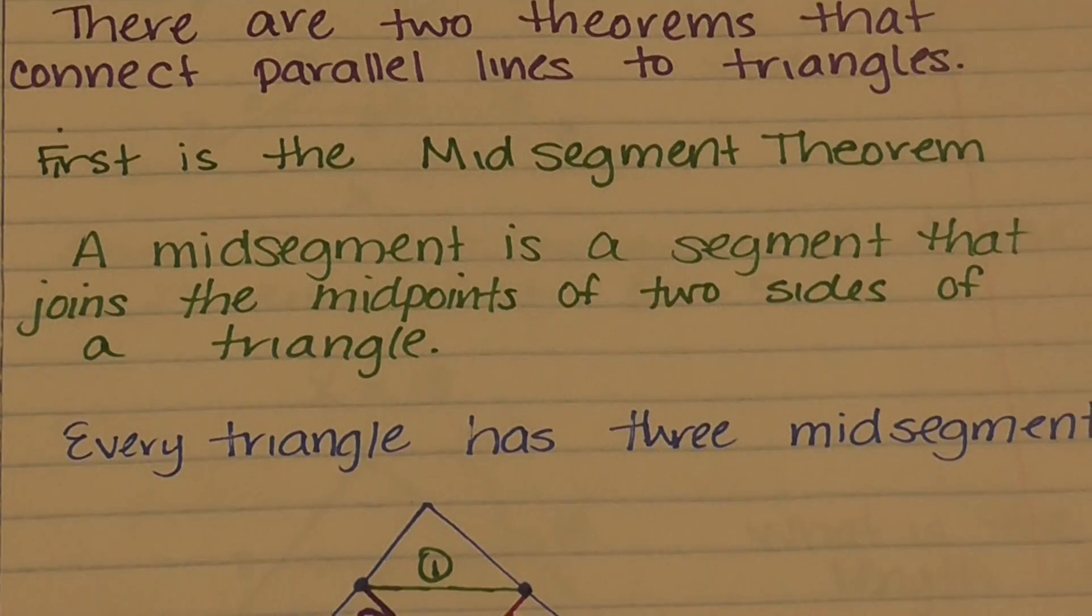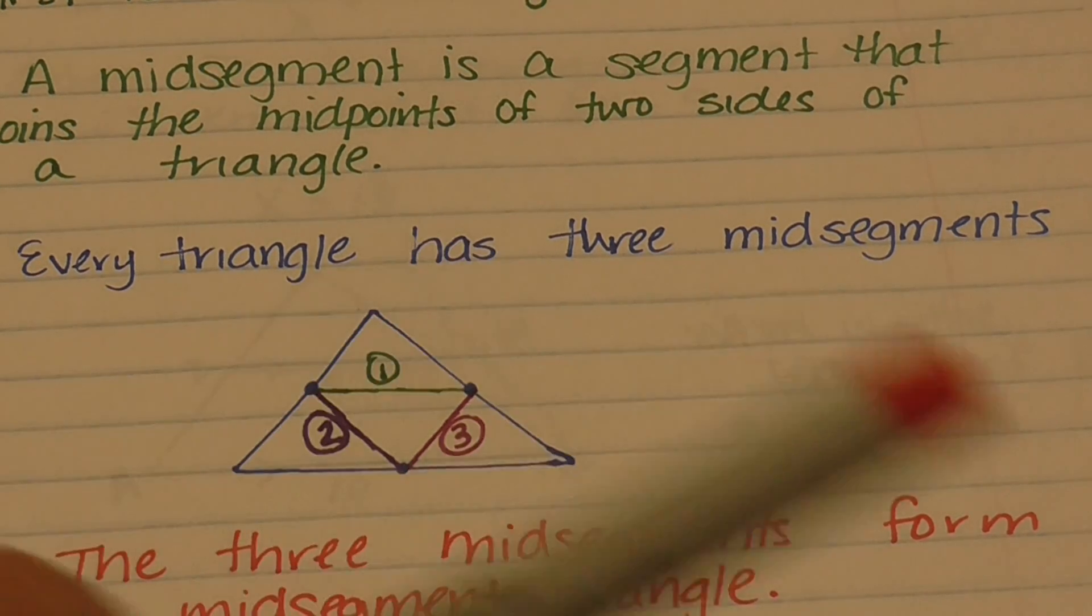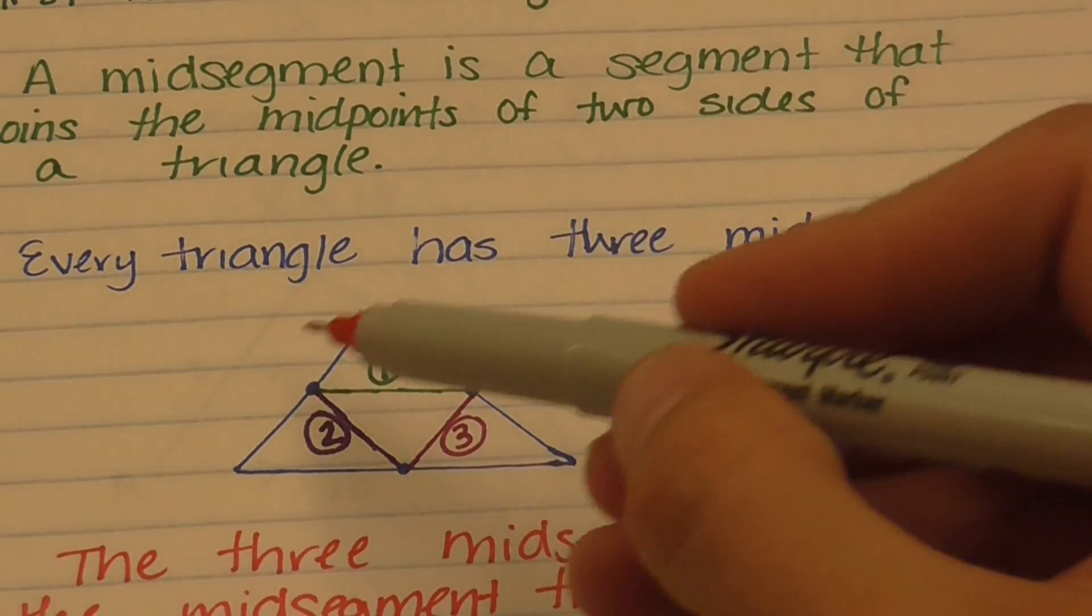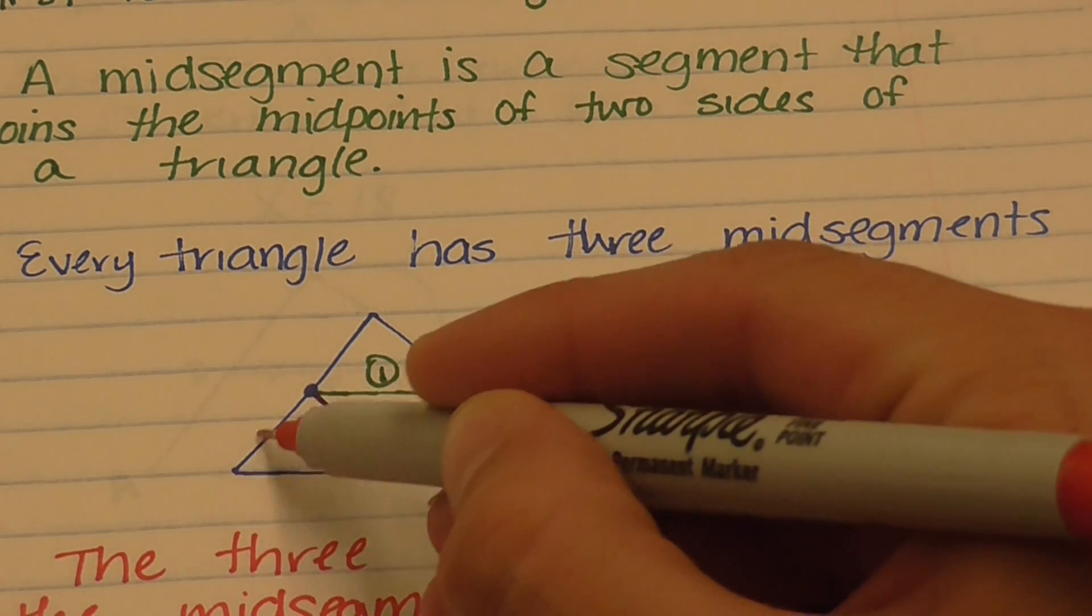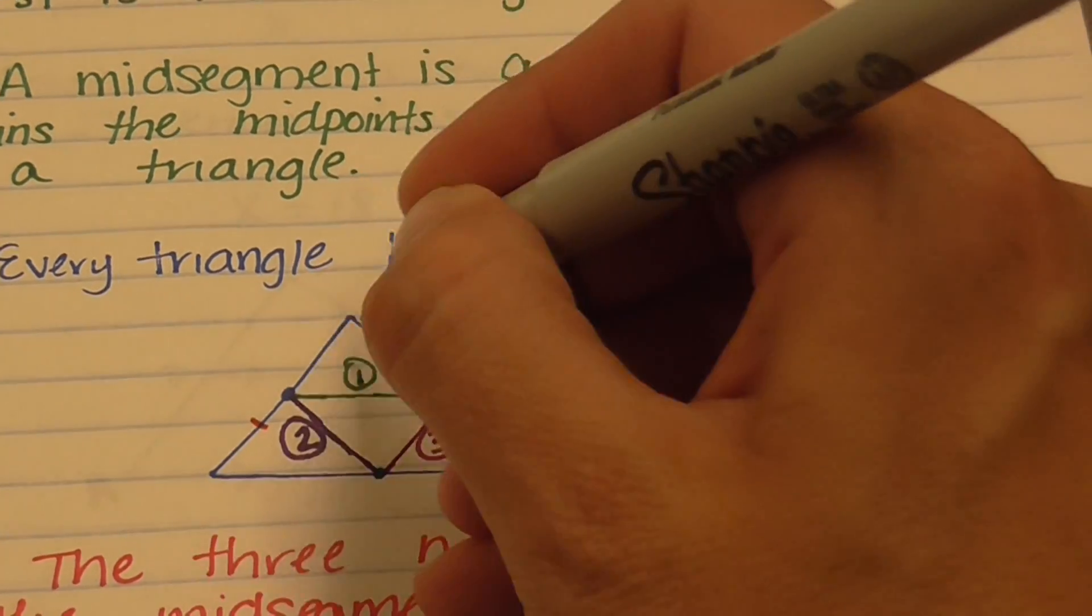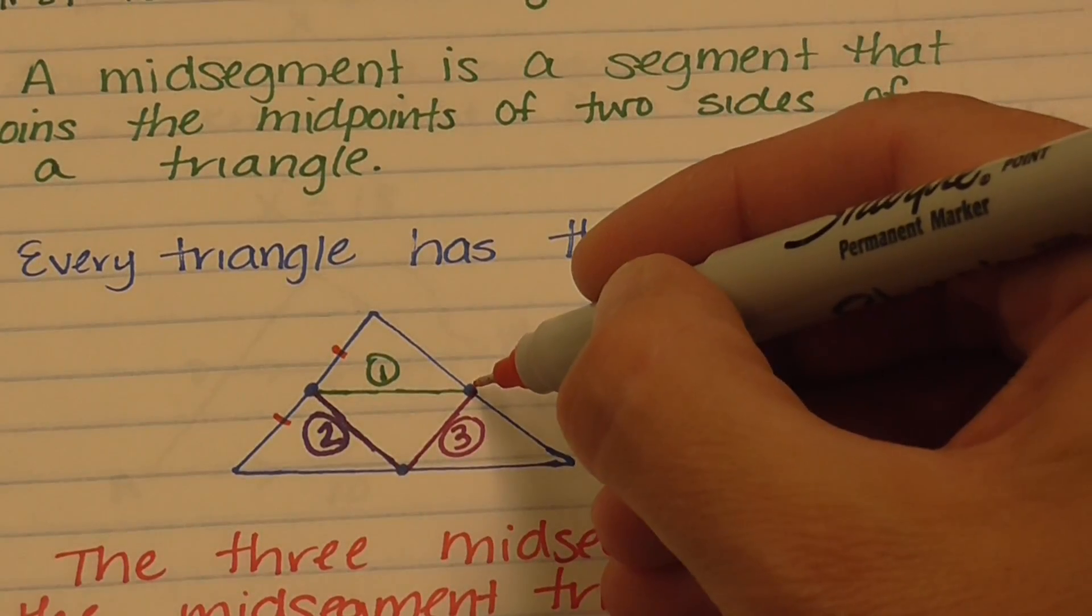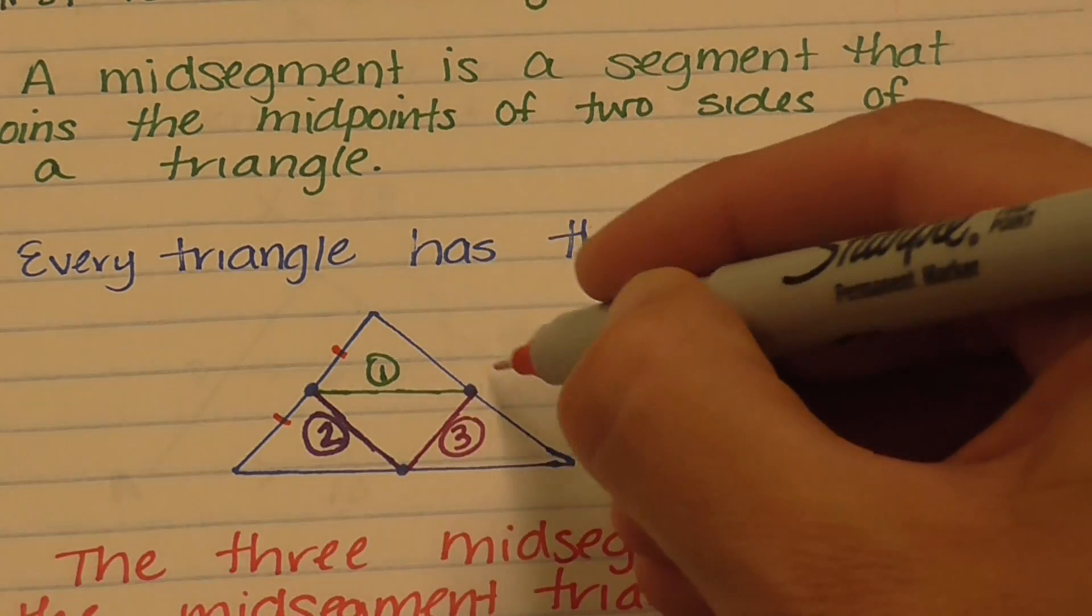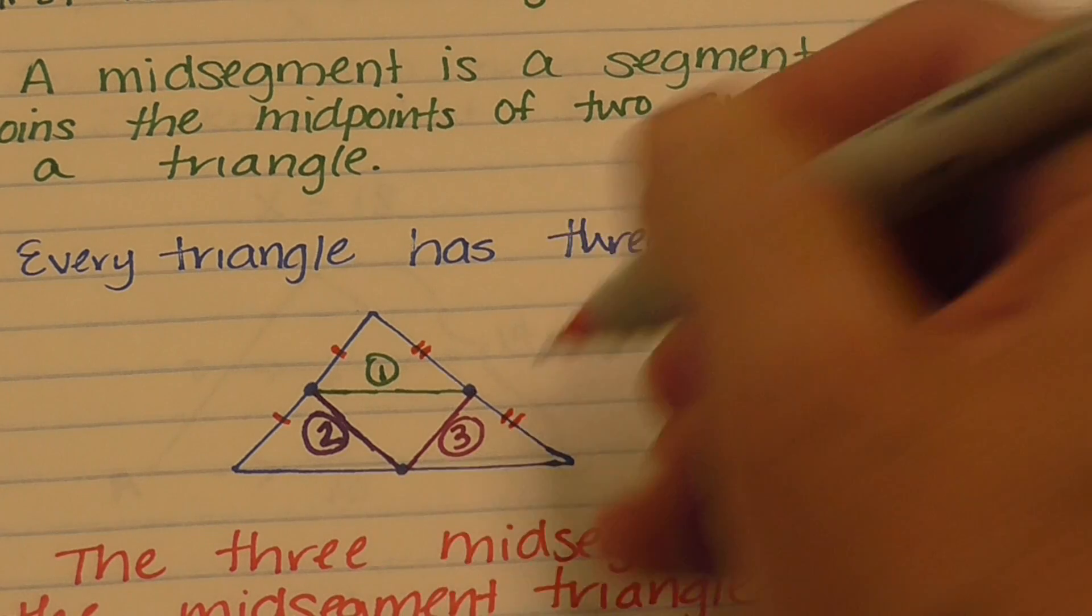Every triangle has three mid-segments. If this is a mid-segment, this point right here is the very middle of this line, making this piece equal to this piece. This point right here is the very middle of this side, so this piece is the same length as this piece over here.